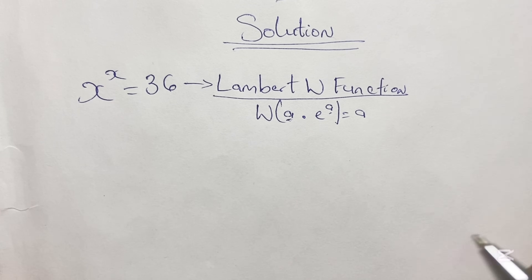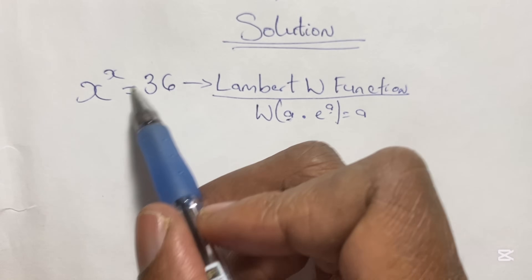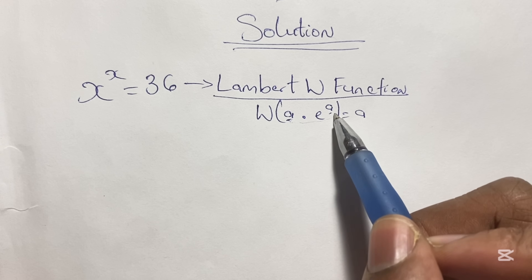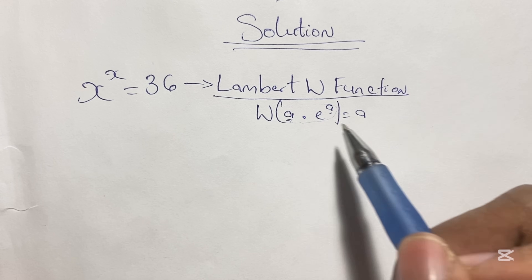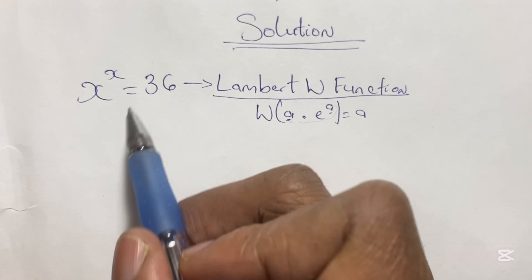So what this means is that we're going to take this equation and write it in the form of a times e to the power of a.